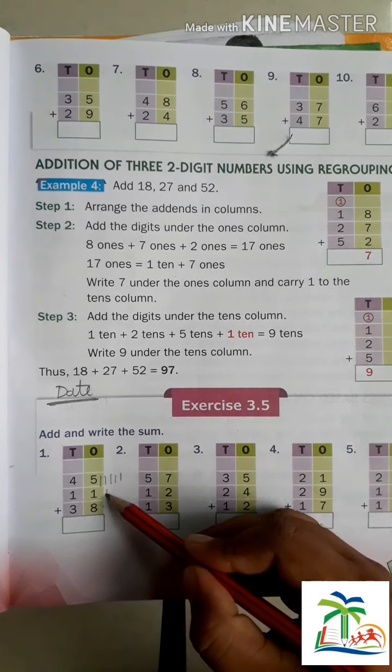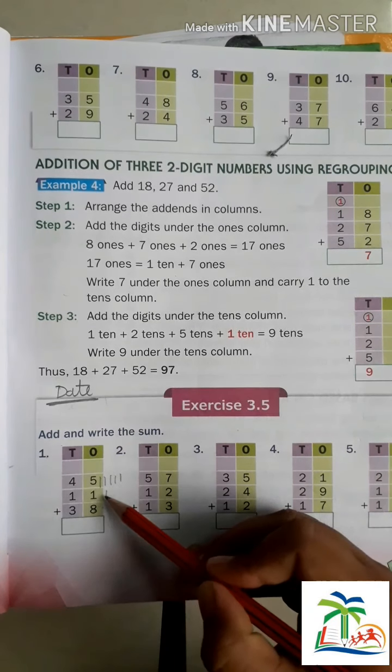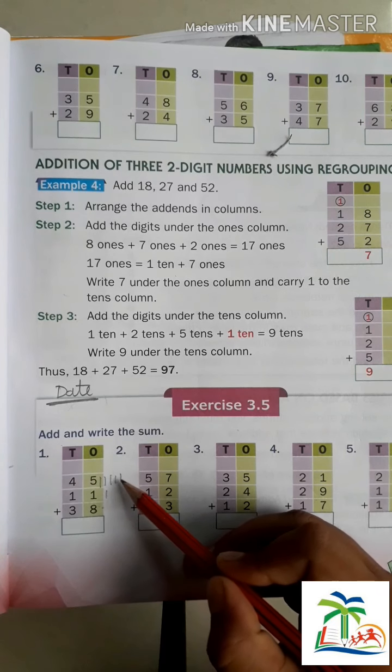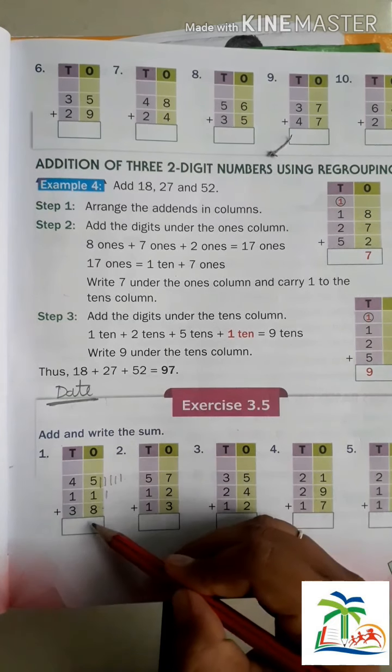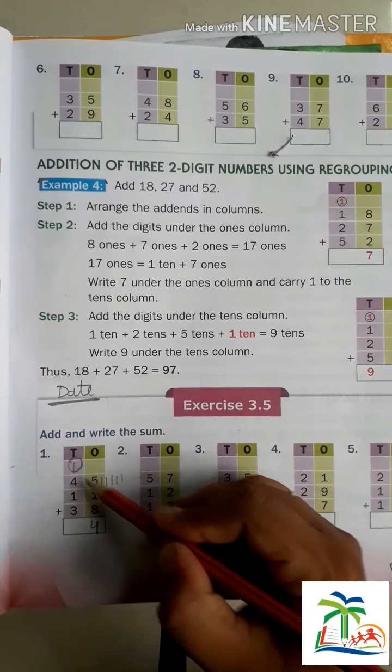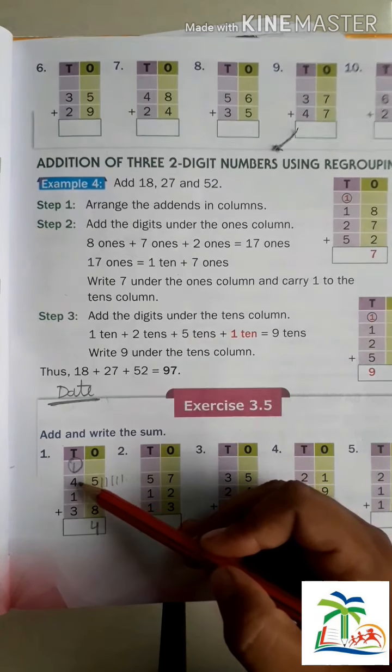Look at here how it is: 8, 9, 10, 11, 12, 13, 14. What we find here? 14. Write down 4 here and 1 here. How? 8 carries we discussed in our previous class.